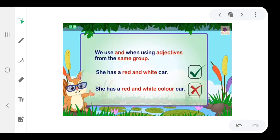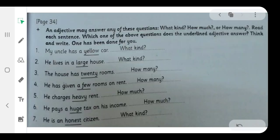Now, we will solve the exercise. An adjective may answer any of these questions: What kind? How much? Or how many? Read each sentence. Which one of the above questions does the underlined adjective answer? Think and write.